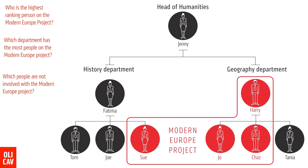It is self-evident. I've colour-coded it and put a border around the container that is the Modern Europe project. Who's the highest-ranking person? The answer is immediate — it's Harry obviously. Which department has the most people? You just need to count — there are more people in the Geography department. Which people are not involved? Simply look at those outside of the Modern Europe container. It's self-evident. What advantage is there in making concepts more complicated than they are, other than disenchanting children and making them create internal narratives that they're not very clever? Computational efficiency — who wouldn't want it?